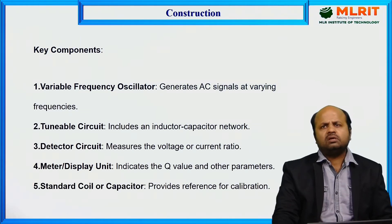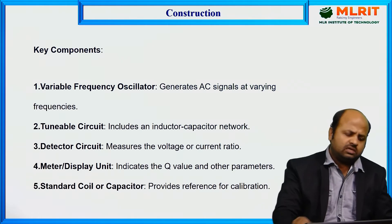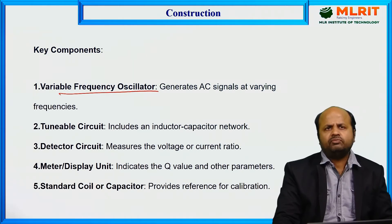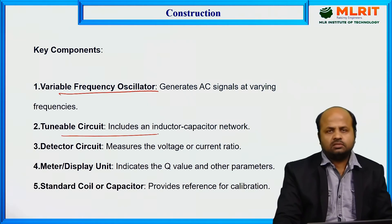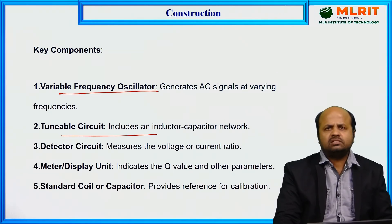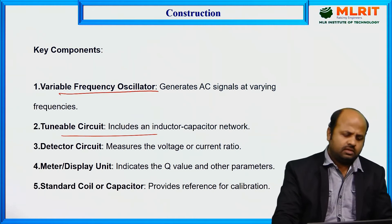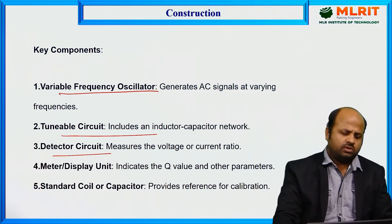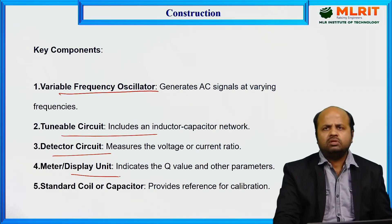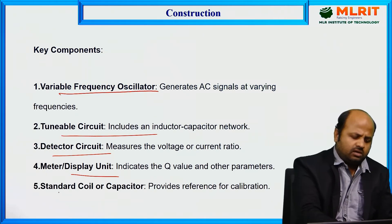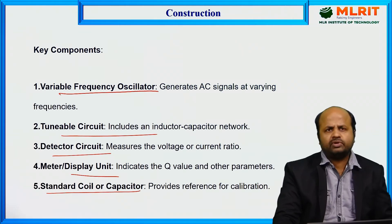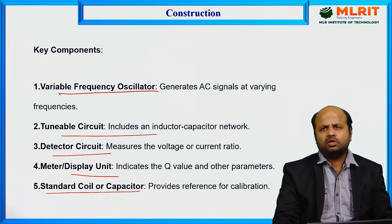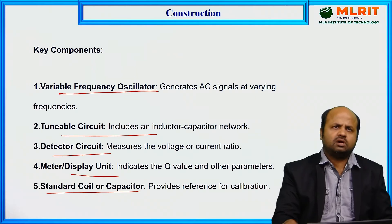These are some of the key components of a Q-meter. A Q-meter generally consists of a frequency oscillator, which generates an AC signal of variable frequencies; a tunable circuit, which is essentially an LC circuit used to select a particular frequency; a detector circuit, which measures the voltage or current ratio; a display unit where Q-meter values are displayed; and a standard coil or capacitor, which provides a reference for the calibration of the Q-meter.